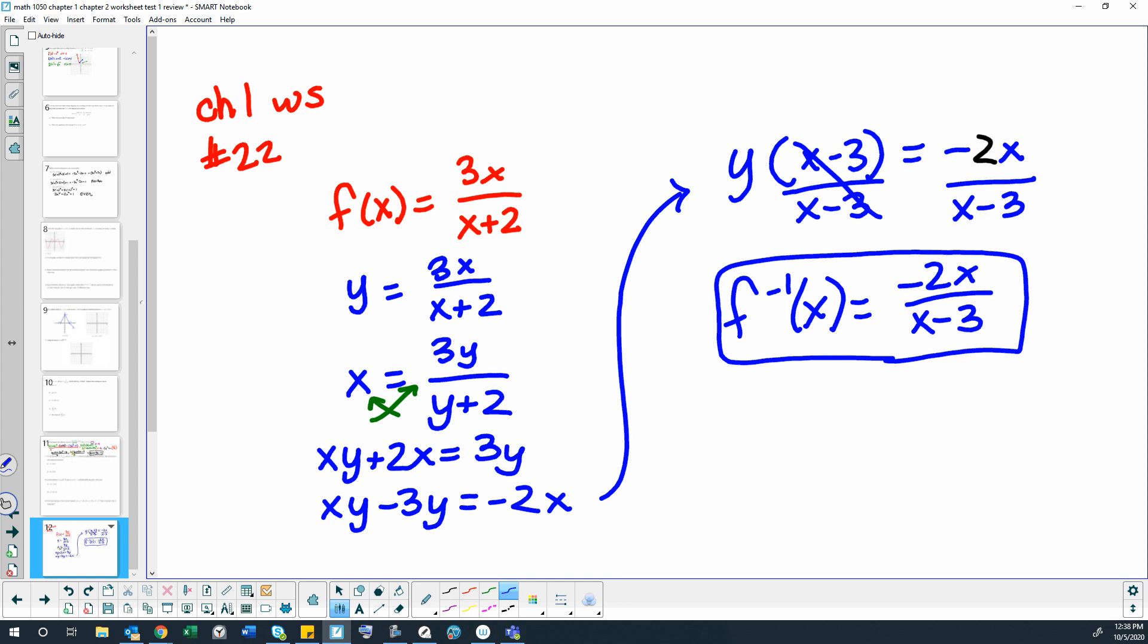But on our inverse function, the domain is x cannot equal 3. So the cool thing about that is it gives us the ranges for the other one, right? So if this is domain cannot equal negative 2, then this means that range y cannot equal 3.